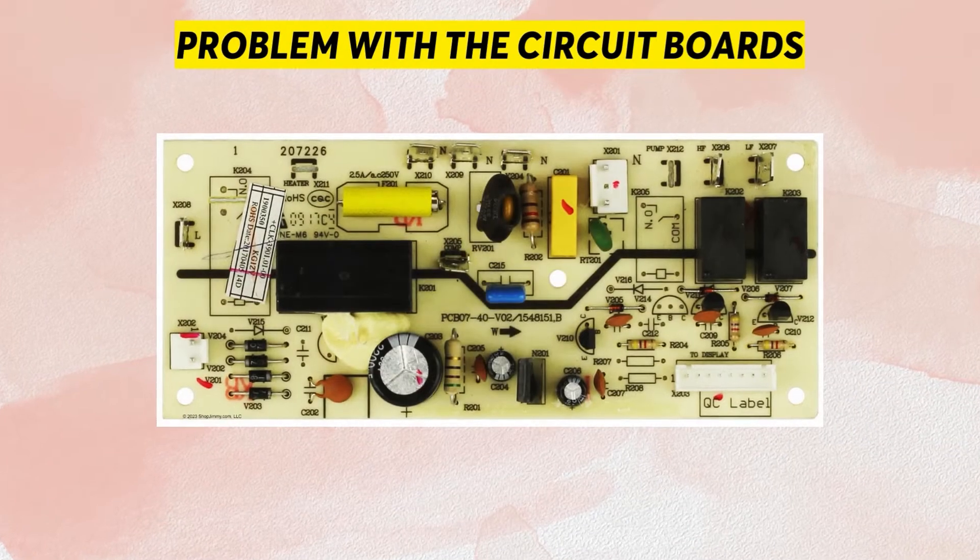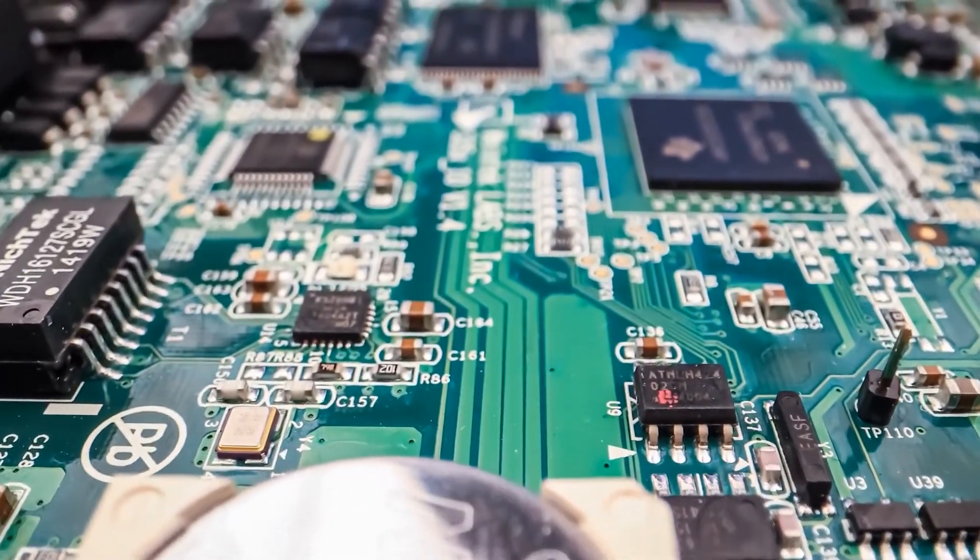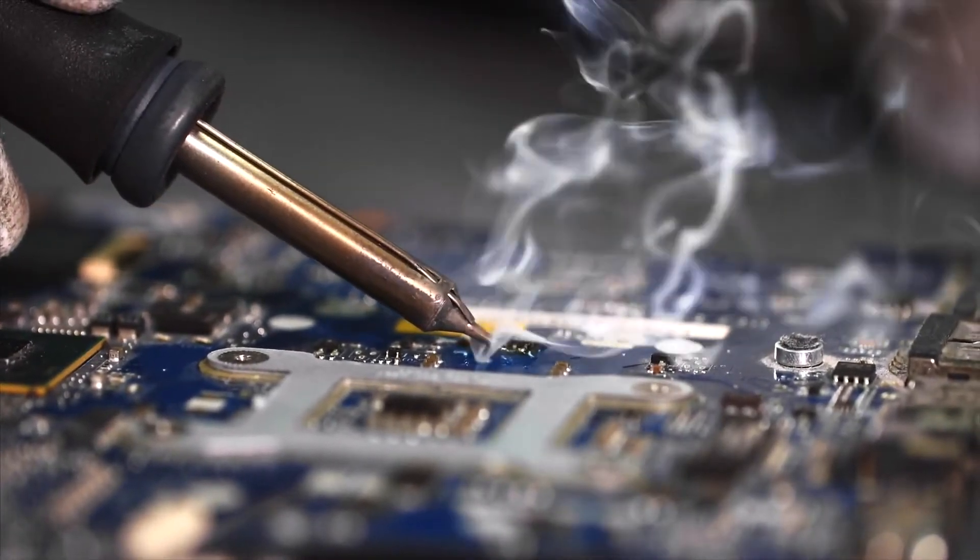Problem with the Circuit Boards: The error can also occur if there's an issue with the sensor's circuit boards. It could be damaged and needs a replacement if the Error Code E9 appears.